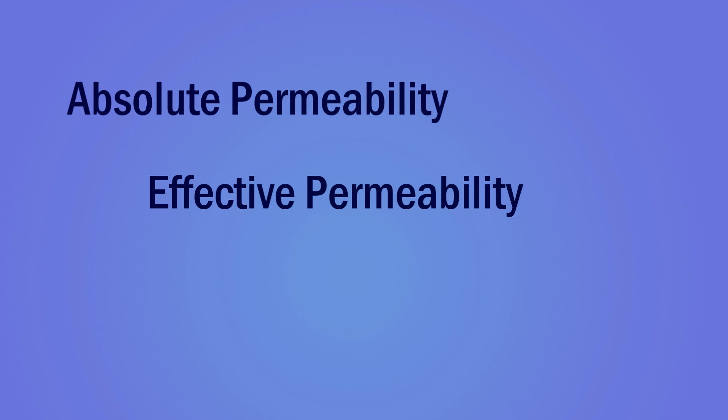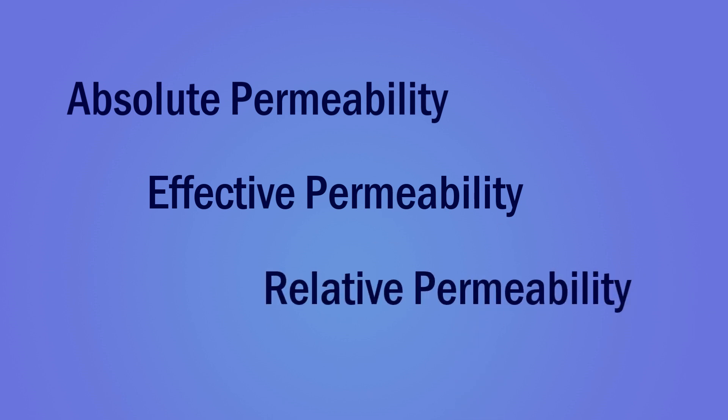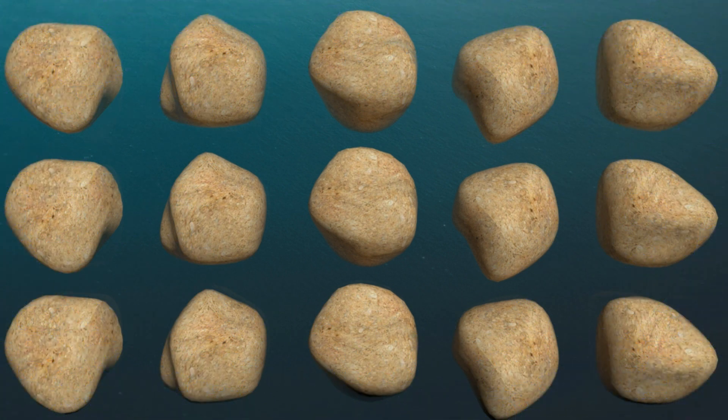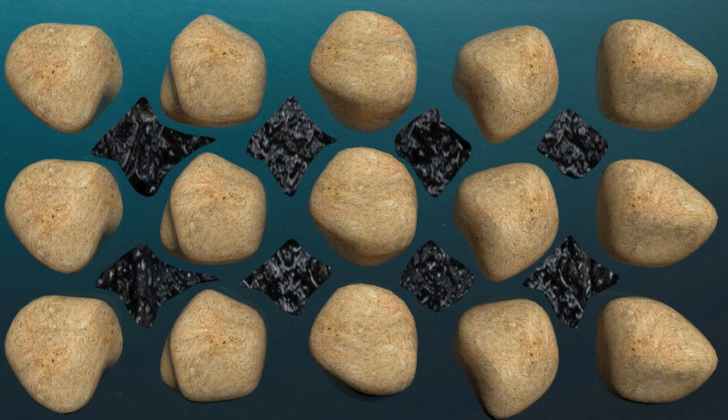Permeability can be classified into three major types: absolute permeability, effective permeability, and relative permeability. Absolute permeability is the capability of a rock to conduct a fluid when it is the only fluid that exists in its pores. Effective permeability is the capability of a rock to conduct a specific fluid when its saturation is less than one hundred percent in the rock pores.